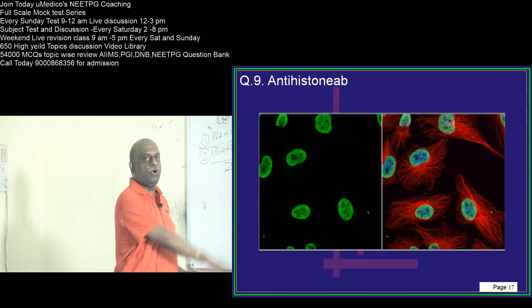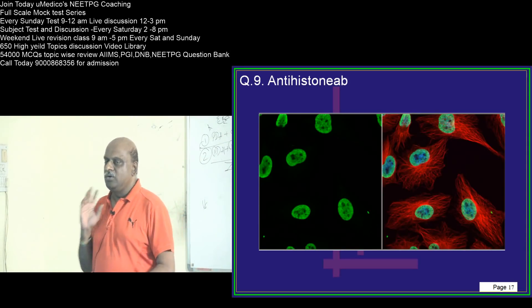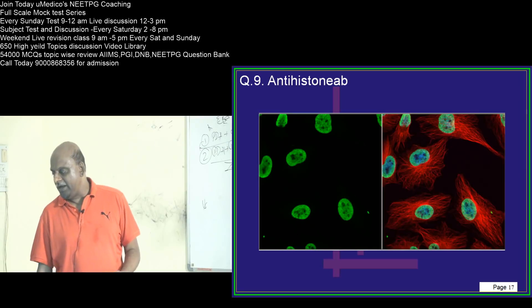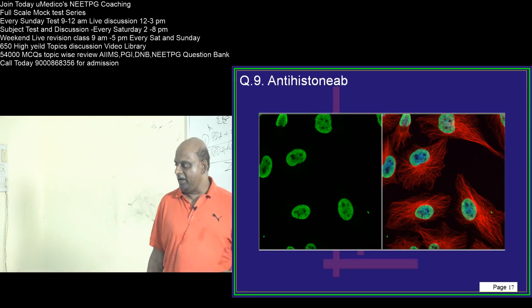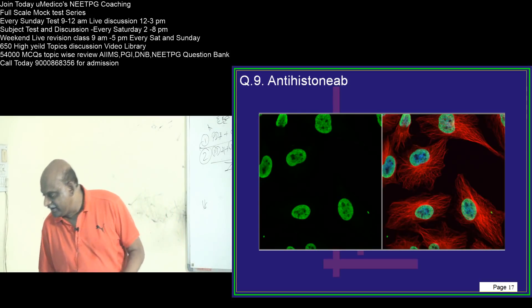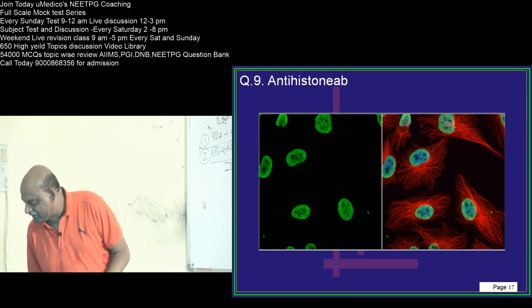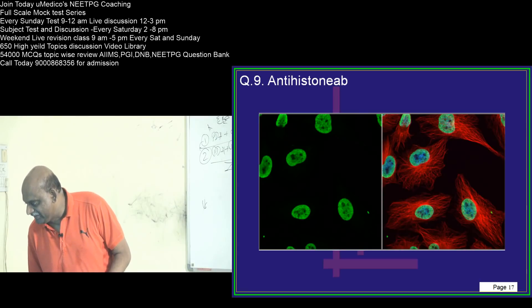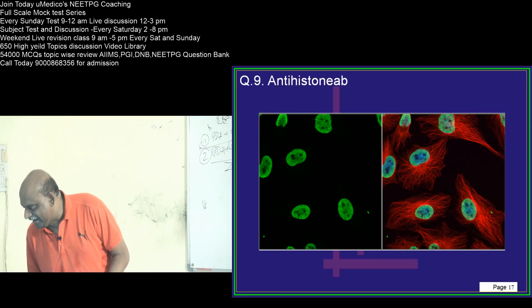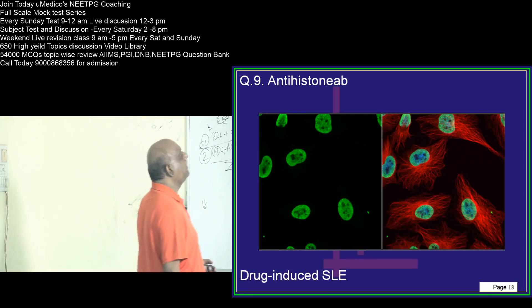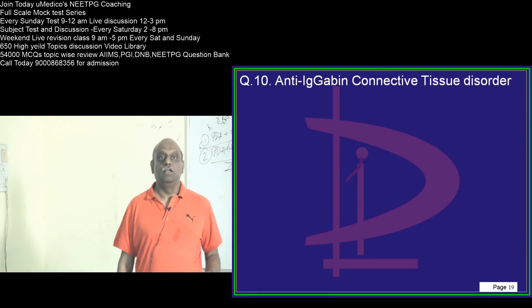Anti-histone antibodies, question number 9. Where do you classically find anti-histone antibodies? Quick answer. Huzafi is saying drug-induced SLE, and Pranahit is saying discoid lupus. Very good — most of you are saying drug-induced SLE, which is the correct answer.